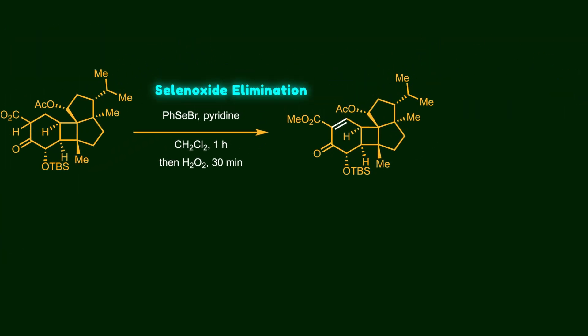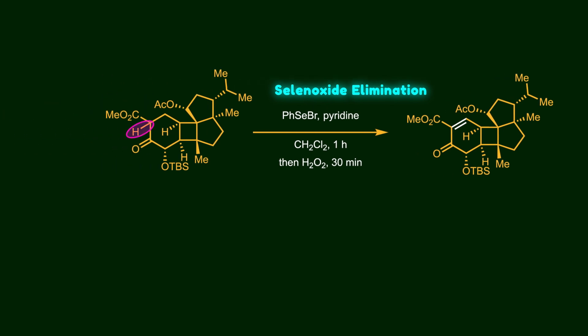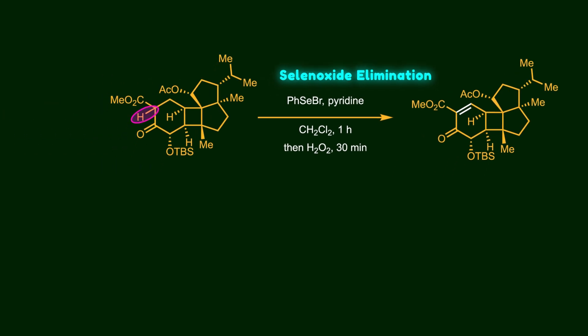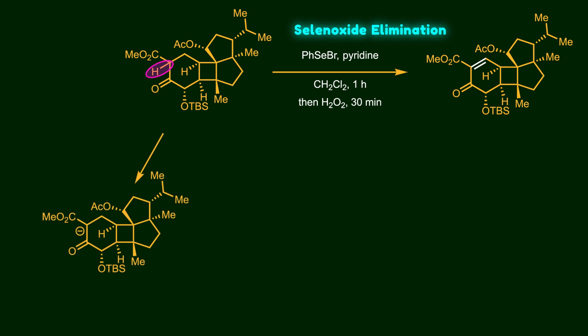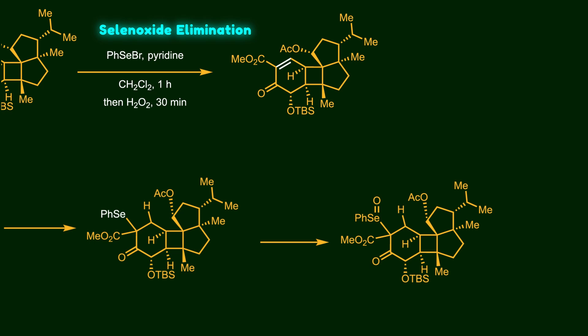Next, we're going to introduce a double bond at this position using the selenoxide elimination strategy. The hydrogen between the two electron-withdrawing groups is highly acidic, so pyridine acting as a base abstracts that proton. Now we've got a good nucleophile that can attack selenium. After that, selenium is oxidized by hydrogen peroxide. The resulting selenoxide abstracts the beta hydrogen and leaves the molecule through elimination.